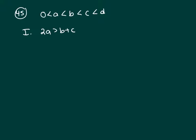Roman numeral I says 2a is greater than b plus c. That's not true. Think about it. Now you're given this: 0 less than a less than b less than c.